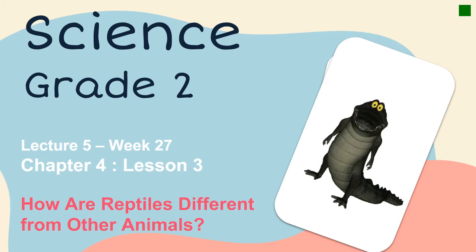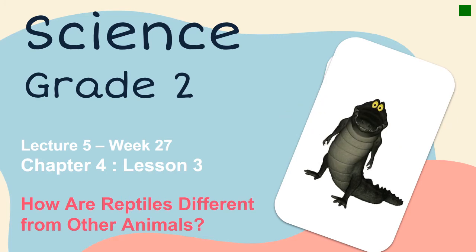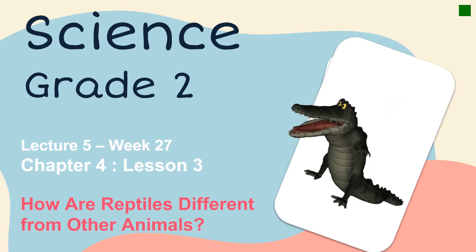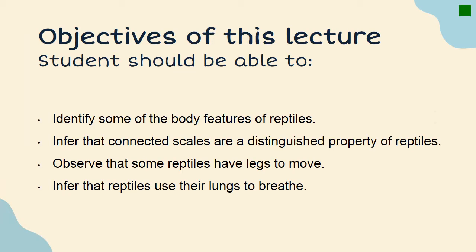Hello Grade 2 students, welcome to a new lecture. In this lecture we're going to learn about reptiles. How are reptiles different from other animals? You have to know that all reptiles have a backbone, breathe with lungs, and have dry or scaly skin. We're going to observe that some reptiles have legs to move, and we're going to identify some of the body features of reptiles. Now we're going to watch a short video before I start explaining.